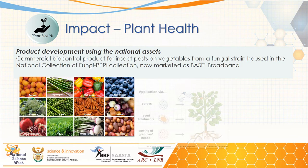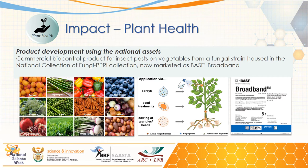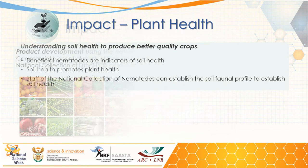The next impact is plant health. Through the recording of biodiversity, it is possible to bioprospect national assets for the benefit of society. An example is the product recently made by BASF called Broadband, used as a biological control for insect pests on vegetables. It was developed from a fungal strain housed in the national collection of fungi. The original strain was isolated from a beetle.